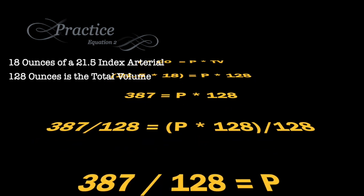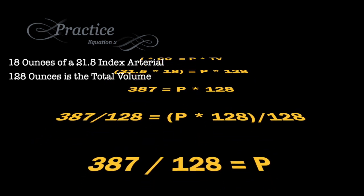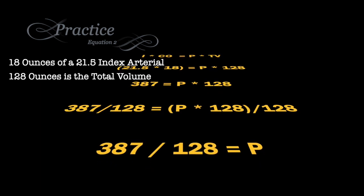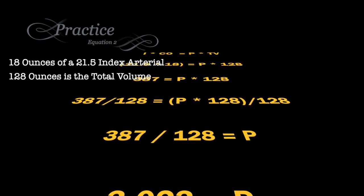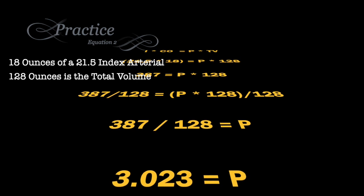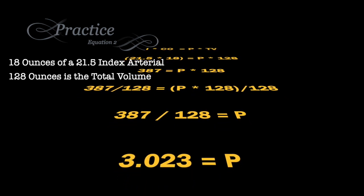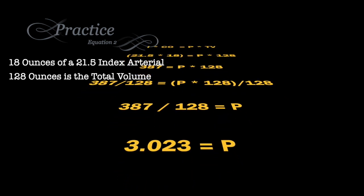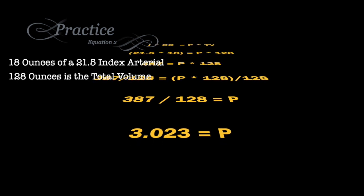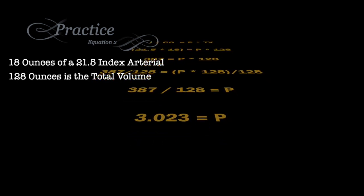And then we have to divide 128 by both sides in order to remove it from the right, and this gives us 387 divided by 128, which is 3.023 percent formalin in the tank.